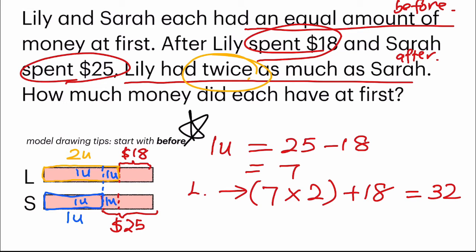Now let's try with Sarah. Since they had equal amount of money at first, I should get the answer 32. Let's see. So Sarah had 1 unit and another $25 that she had spent. So 1 unit is 7, then plus 25. And my answer is 32. Same.